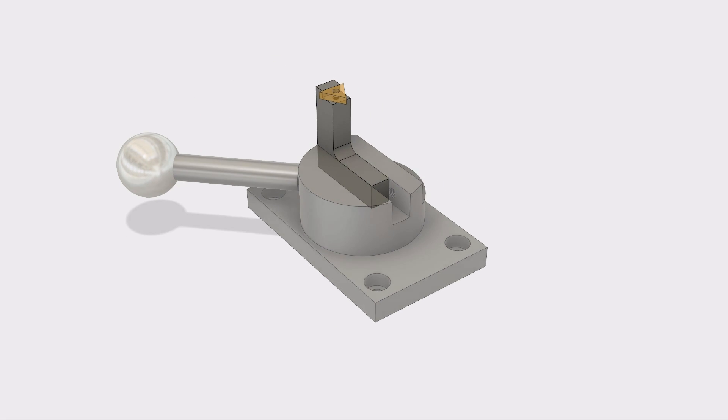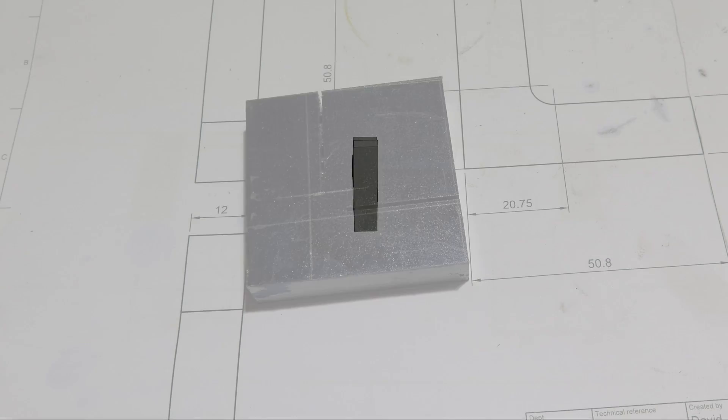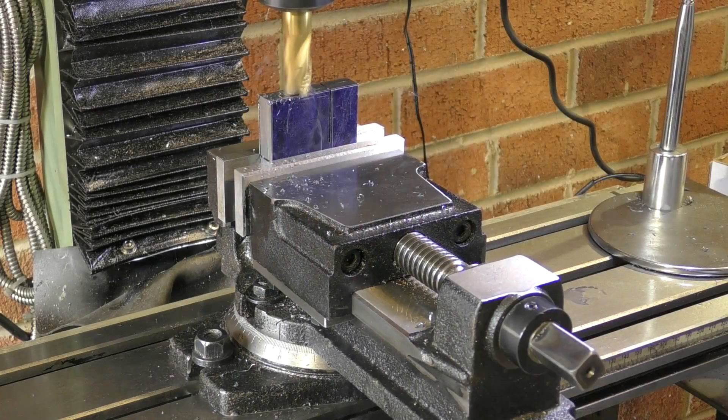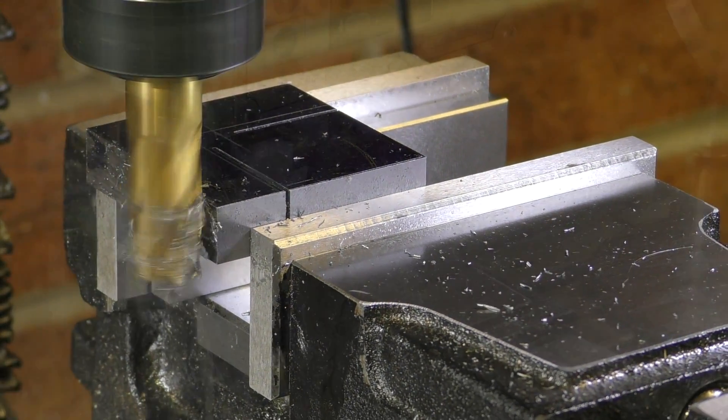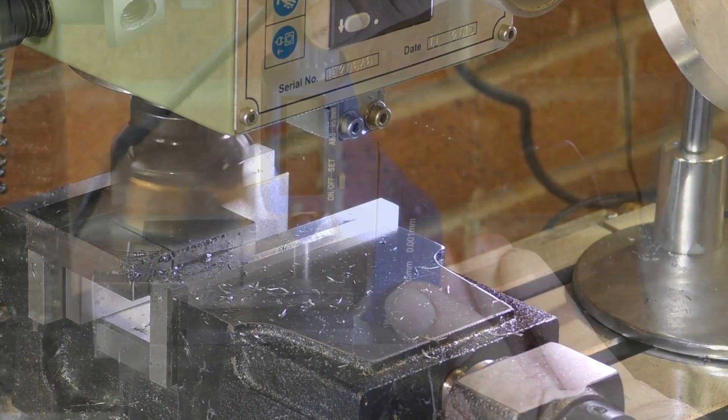The only major remaining part to make next is the tool holder, and that starts life from the same piece of steel that the base is made from. I've used the band saw to put in a few starter cuts, then I'm squaring the part up in the mill. With that done, its thickness can be reduced to size, and then it's just a case of tidying it up.